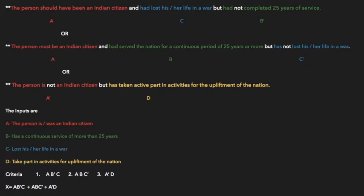The final Boolean expression combining all three criteria with OR is: X = A·B'·C + A·B·C' + A'·D. You can pause and analyze this condition clearly if you have any doubt.